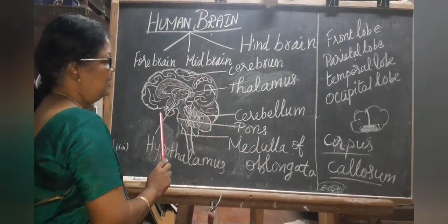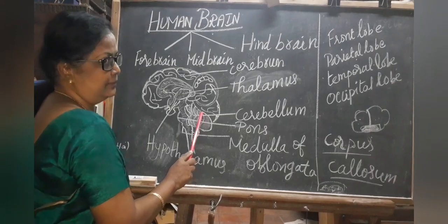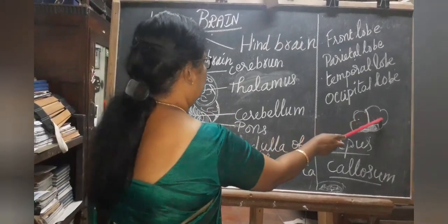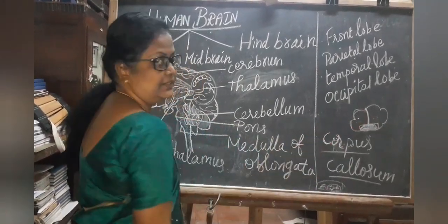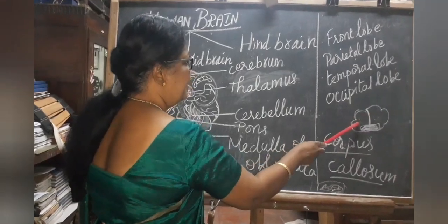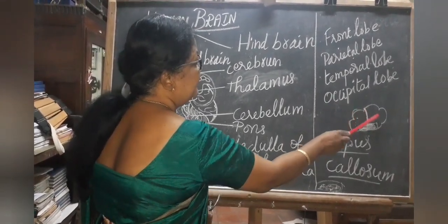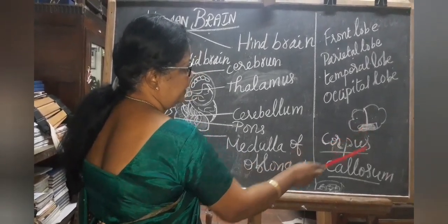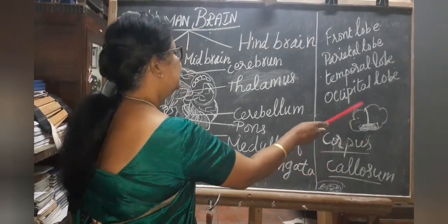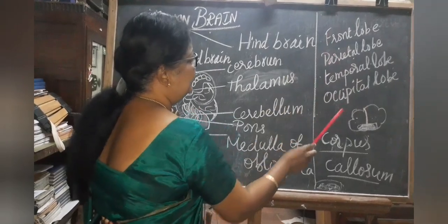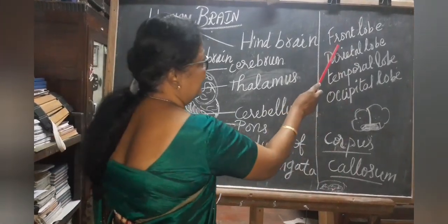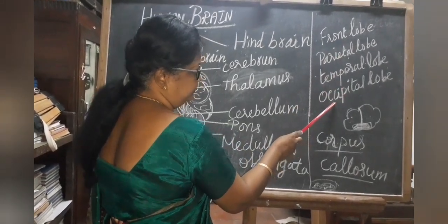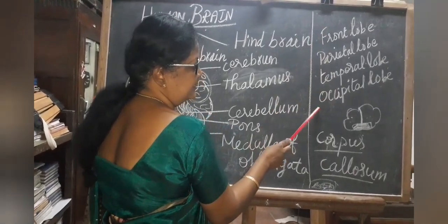The cerebrum is the largest portion of the brain and occupies two-thirds of it. It is divided into two hemispheres called cerebral hemispheres, connected at the base by a band of nerve fibers called the corpus callosum. Each cerebral hemisphere is divided into four lobes: frontal lobe, parietal lobe, temporal lobe and occipital lobe, collectively called cerebral lobes.